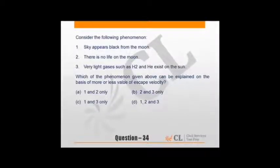Sky appears black from the moon - from the moon we have three statements, three phenomena. What can we explain on basis of escape velocity? Very light gases such as helium and hydrogen exist on sun - it is because of very high escape velocity that even they exist. There is no life on moon - that cannot be excluded because of this. Sky appears black from moon - again, that's correct. So 1 and 3 stand correct. Escape velocity means if they have low escape velocity, things will escape easily. If high escape velocity, it's not easy to escape. That explains some of these phenomena.